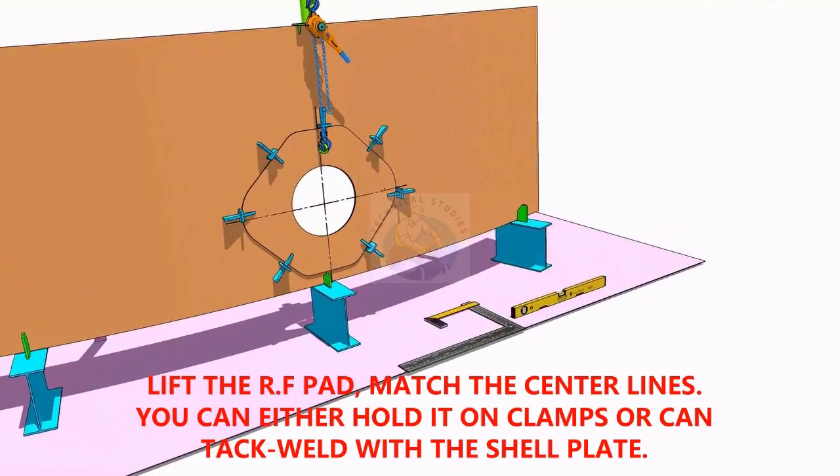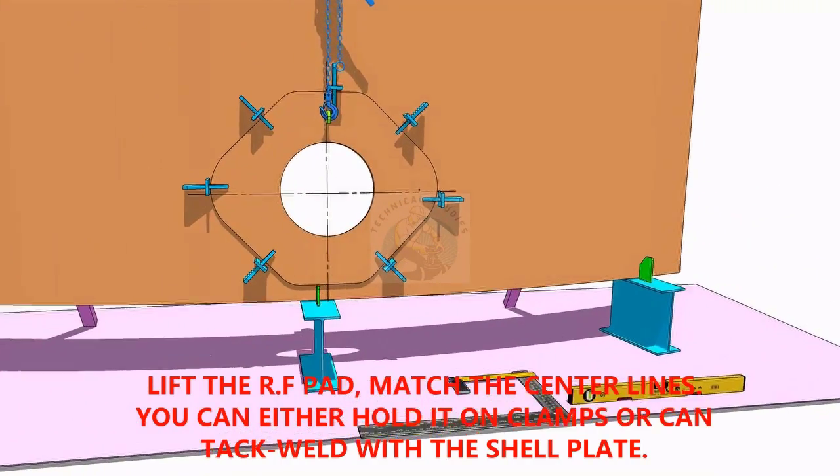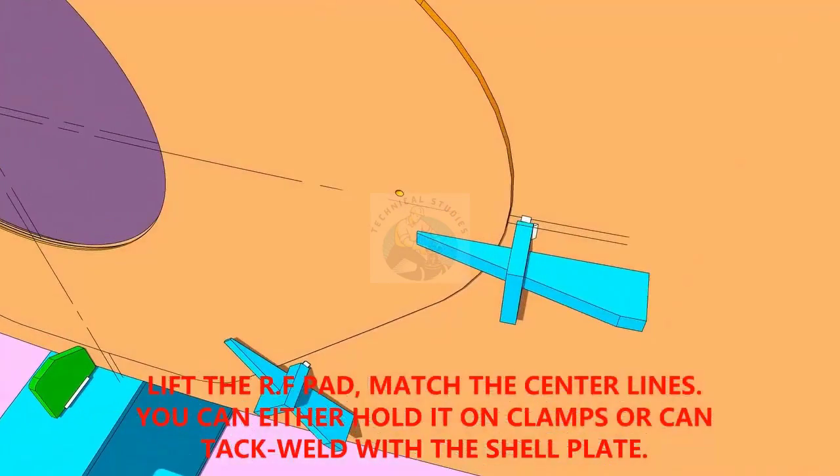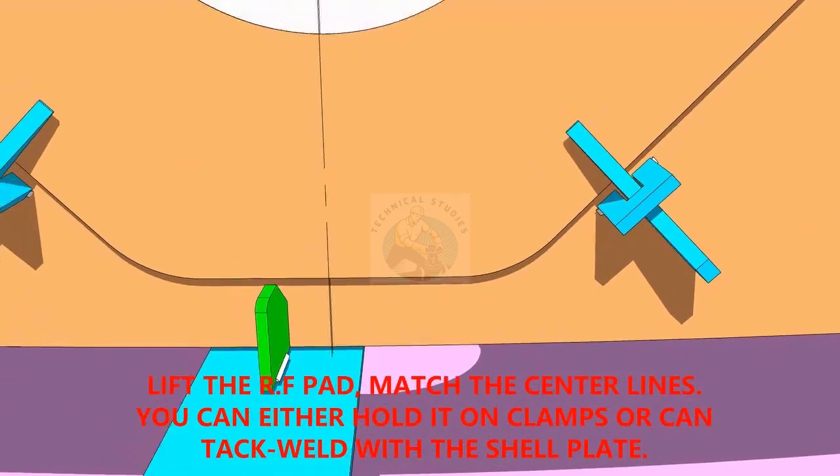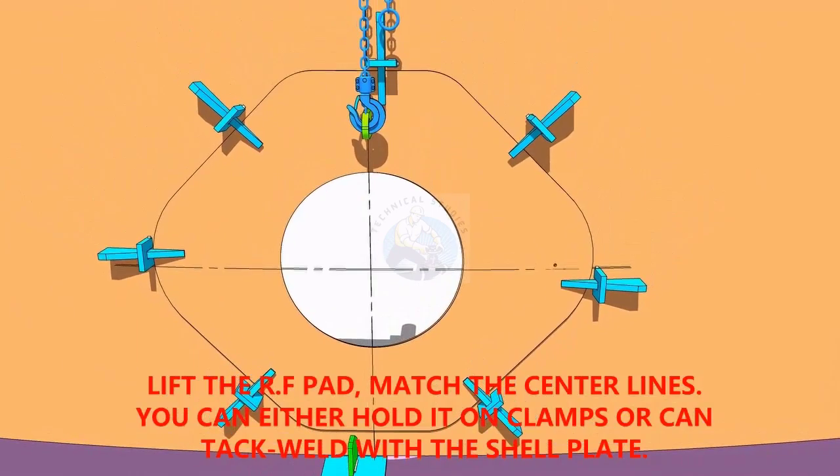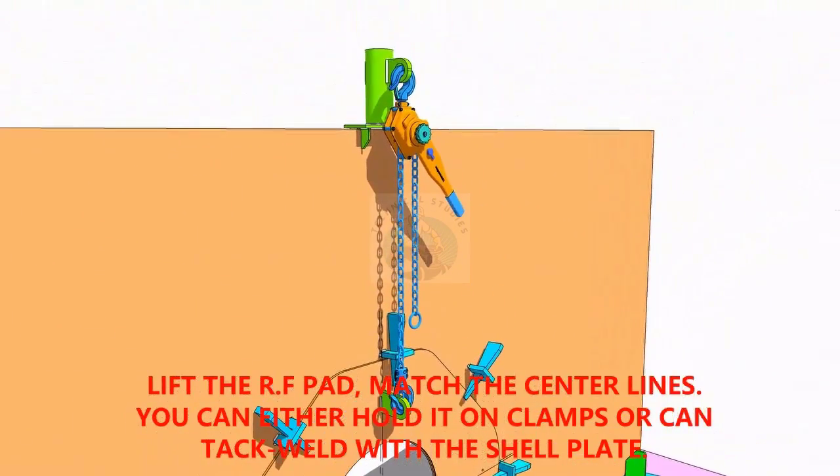TAC weld the reinforcement pad on the shell plate. You can either TAC weld directly on the shell or fix it with clamps as shown. Make sure the center lines on the shell plate and the pad are matching.